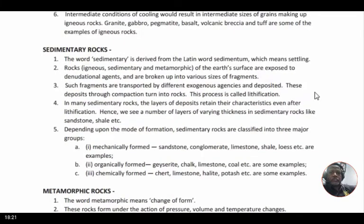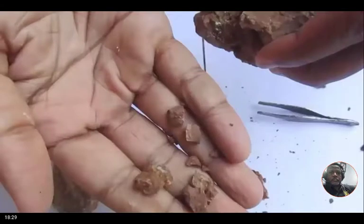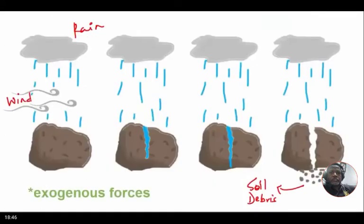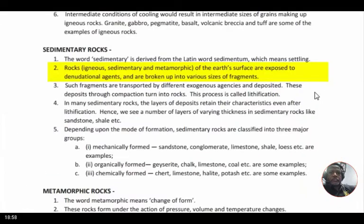Now we move on to the second type: sedimentary rocks. The word sedimentary is derived from the Latin word sedimentum, meaning settling. Sedimentary rocks can be easily broken down into tiny sediments of mud and soil debris, and they have the tendency to settle down on the earth's surface easily. Rocks of the earth's surface are exposed to denudational agents — also referred to as exogenous forces like wind, water, and ice — which erode the rock and break it down into small soil debris, affecting all types of rocks: igneous, sedimentary, and metamorphic.